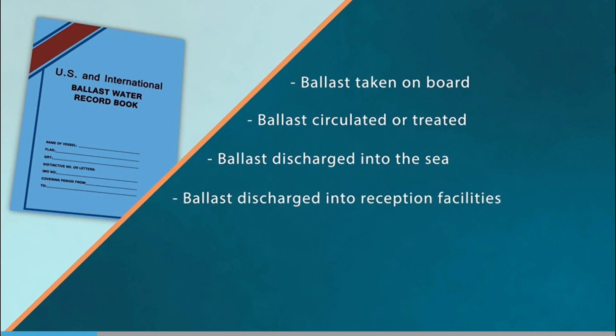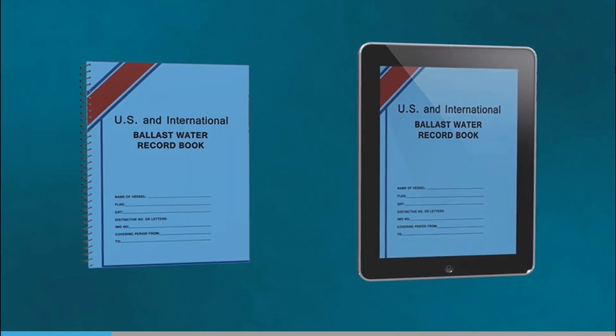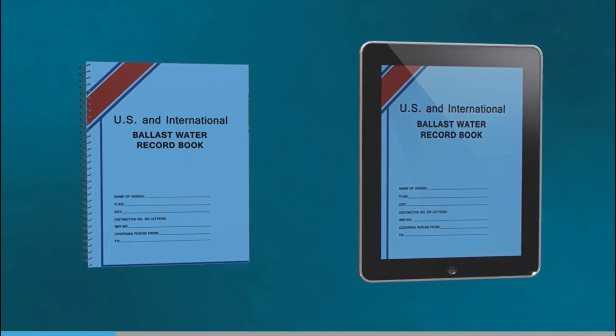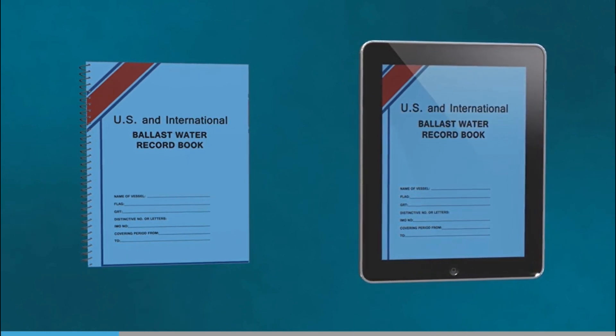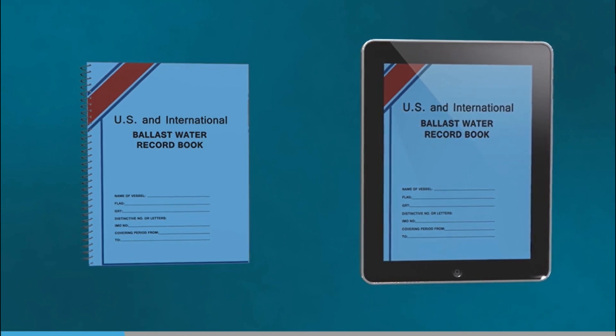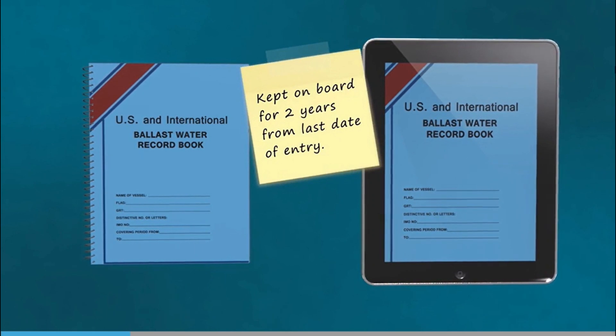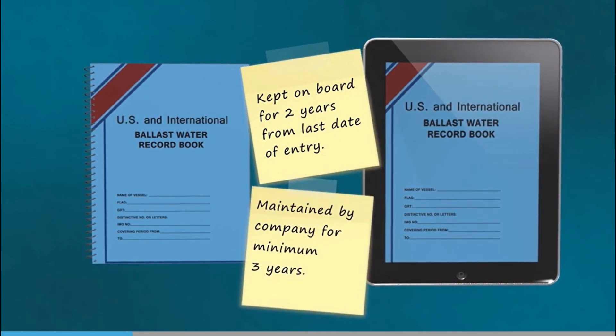The book must also record ballast discharged into reception facilities and ballast discharged accidentally or under exceptional circumstances. The book may be electronic or paper. Every entry must be signed by the ballast water management officer and every page signed by the master. The record book must be kept on board for two years from the last date of entry, then maintained by the company for a minimum of three years.